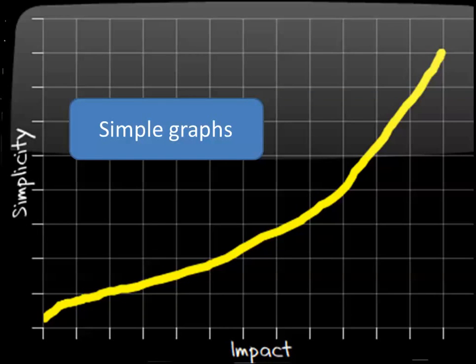If you are going to use graphs in your presentation, don't necessarily use the graphs that came in your source material. A lot of those graphs will have heaps of information in them and you will overwhelm and confuse your audience. Keep it nice and simple — they should be able to recognise it. I'm not saying dumb it down; I'm saying boil it down to its essential elements. What do you need to tell the story? As simplicity goes up, impact goes up. Keep your graph nice and simple, even if you have to draw it yourself. Boil it down to its essence — simple, not dumb.